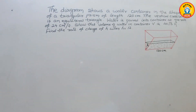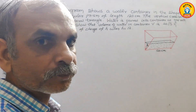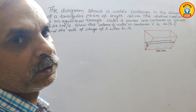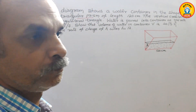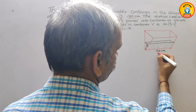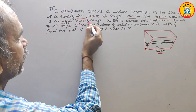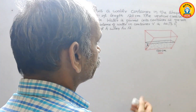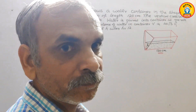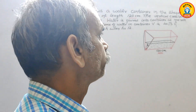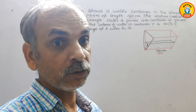We need to find the rate of change of height h. So this is your figure. It is a triangular prism — the length is given as 120 cm. The vertical cross section is an equilateral triangle, so this is your equilateral triangle. Water is poured into the container, and we have to show that the volume is 40√3 h².